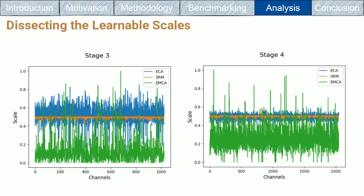In addition, 1.5% of the produced scales by EMCA are 0s, while ECA and SRM produce non-zero scales. Thus by pruning the channels that have 0 importance scale, we achieve a further gain in the performance in terms of GFLOPs, FPS, and number of parameters while achieving the same accuracy.